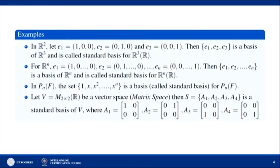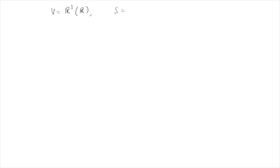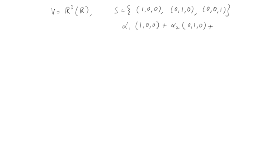In R³, if you take E₁ = (1,0,0), E₂ = (0,1,0), E₃ = (0,0,1), this is a basis called the standard basis of R³. To verify: first, taking a linear combination of this set equal to zero implies α₁ = α₂ = α₃ = 0, so the set is linearly independent.